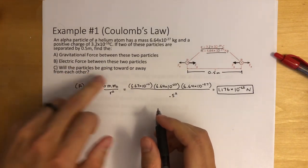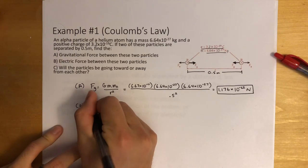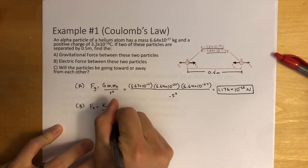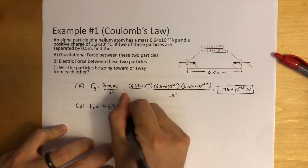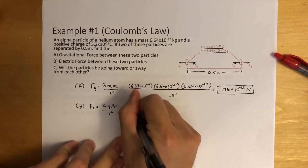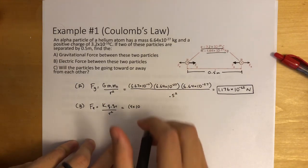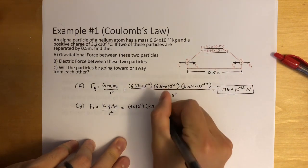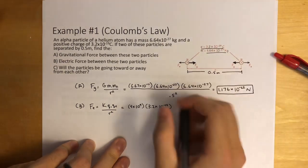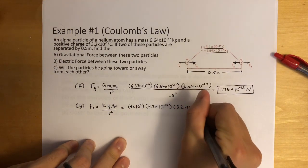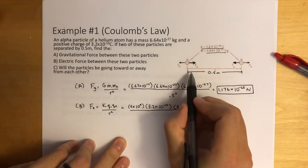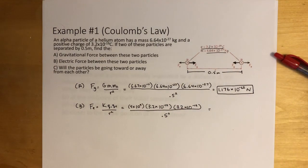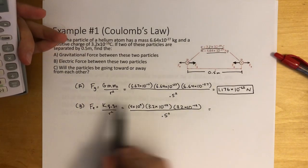Next: what is the electric force between these two particles? Looking at Coulomb's Law, the force of electricity equals the k constant times the charge of one object times the charge of the second object, divided by r squared. The k constant is 9 times 10 to the 9th. The charge of each particle is 3.2 times 10 to the negative 19 Coulombs, and they're 0.5 meters apart, so we use 0.5 squared. Make sure to put this into your calculator correctly.